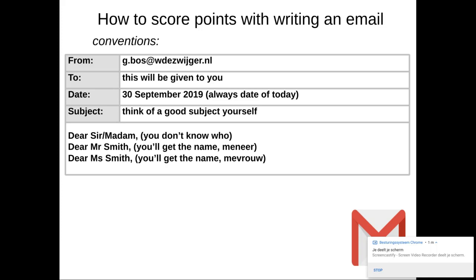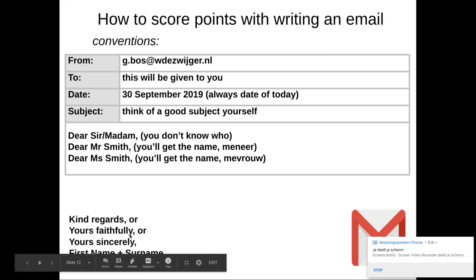So, dear sir madam, or dear Mr. Smith, or dear Ms. Smith, or whatever. Then you end your email with kind regards, or yours faithfully, or yours sincerely. You put a comma, and immediately below that, your first name and surname. And for these, of course, you have to choose. You can't choose all three of them. That would be a little bit silly. Okay, that's one point. Conventions. Next.